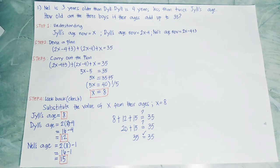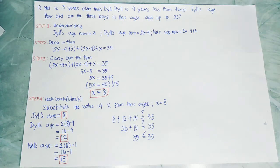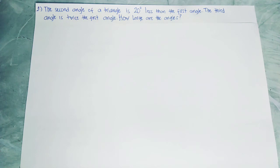Now let's proceed to the second example using Polya's 4-step method in solving problems. The next problem is: the second angle of a triangle is 20 degrees less than the first angle. The third angle is twice the first angle. How large are the angles?